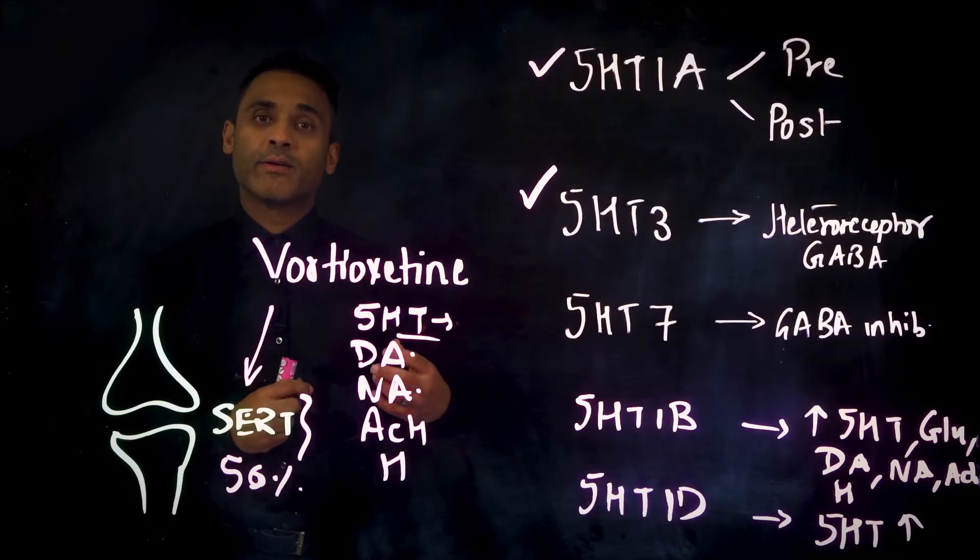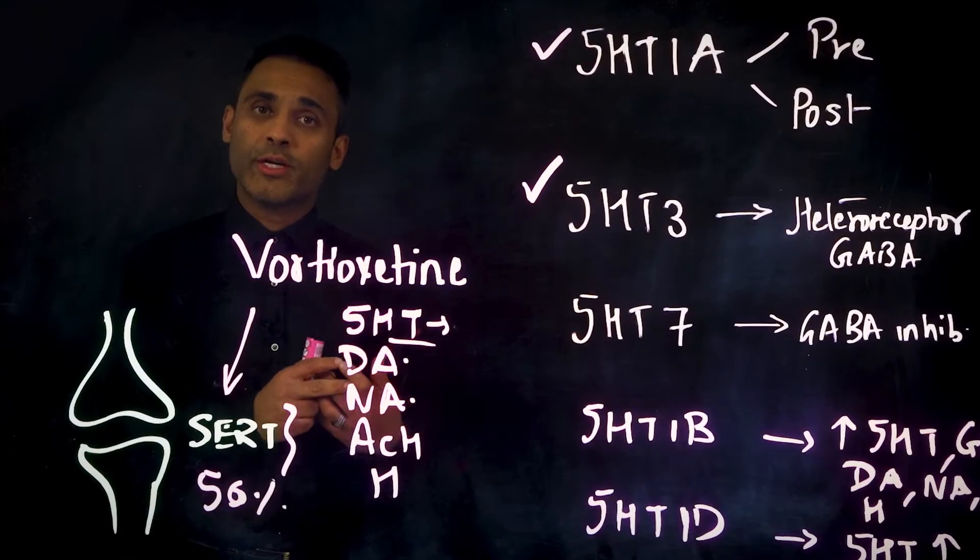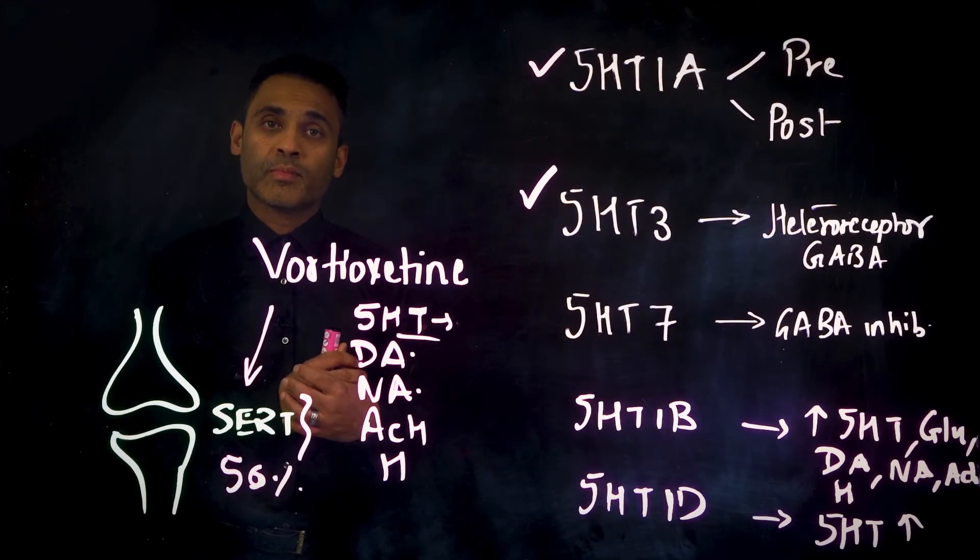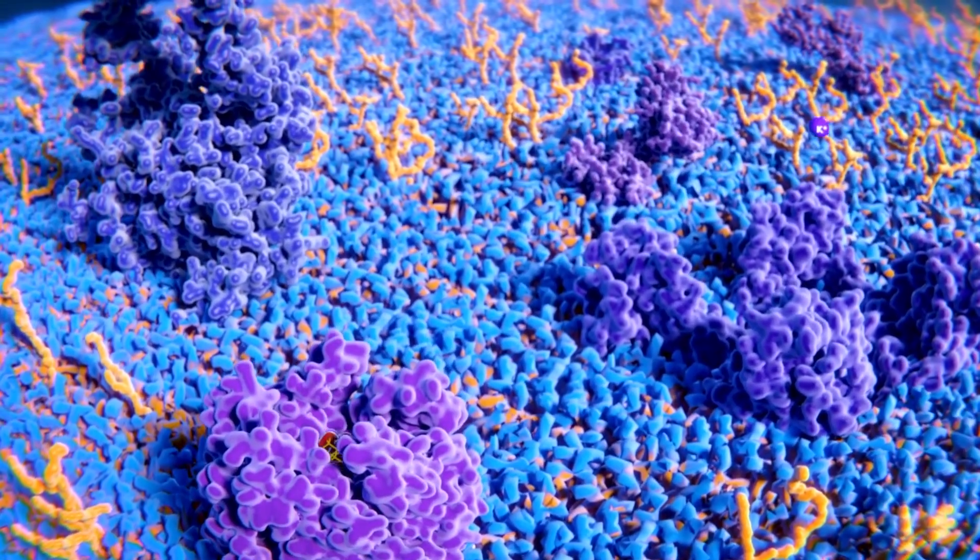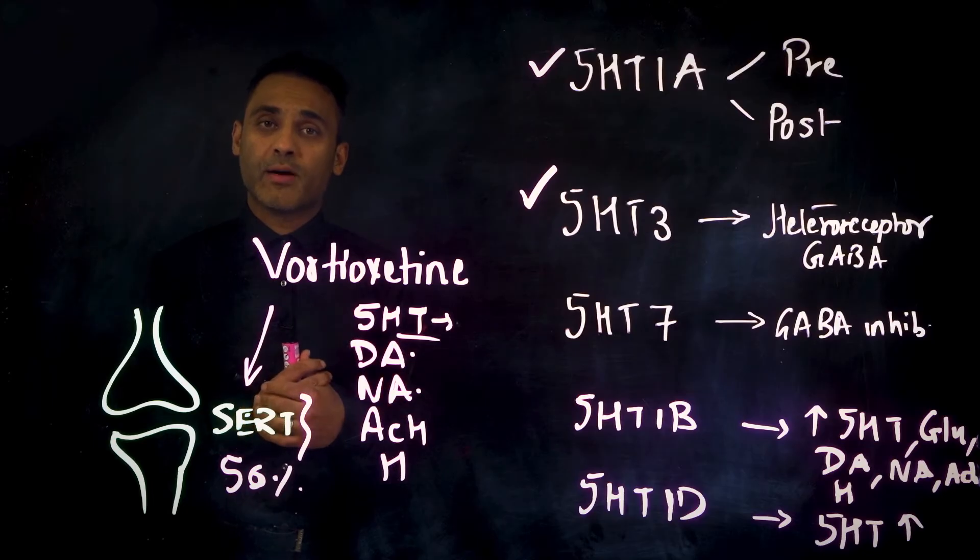Next, we have the 5-HT7 antagonism. Again, inhibits GABA and increases levels of serotonin in the dorsal raphe nucleus. Furthermore, it also increases levels of acetylcholine and histamine. This is where some of the pro-cognitive effects come in.